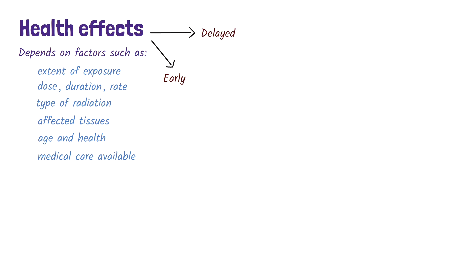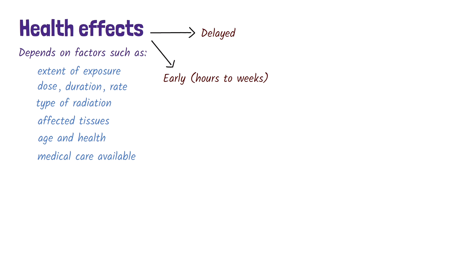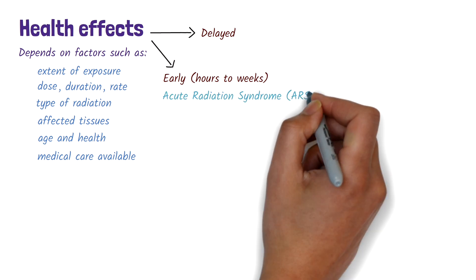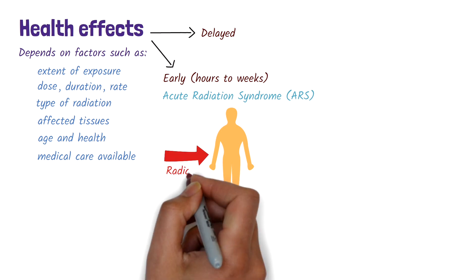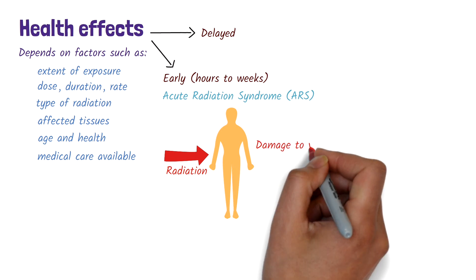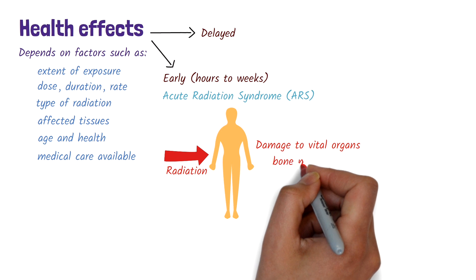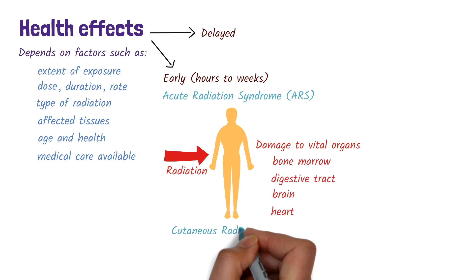The health effects can be broadly categorized as early or delayed. Early effects occur within hours to weeks after exposure. One of the most serious is acute radiation syndrome. This syndrome can develop when the whole body, or most of it, is exposed to a high dose of penetrating ionizing radiation over a short period of time. It can cause damage to vital organs, such as the bone marrow, digestive tract, brain, and heart. Cutaneous radiation injury may also occur, leading to significant skin damage.